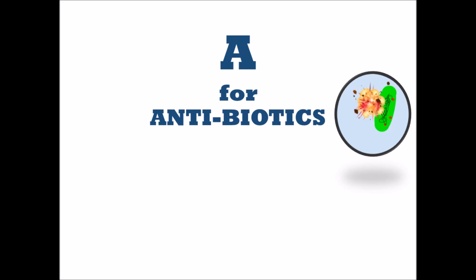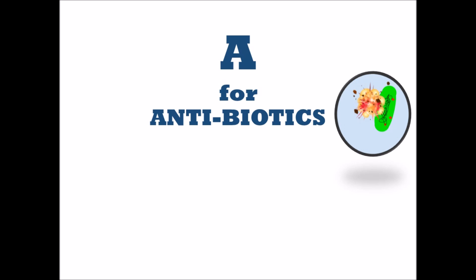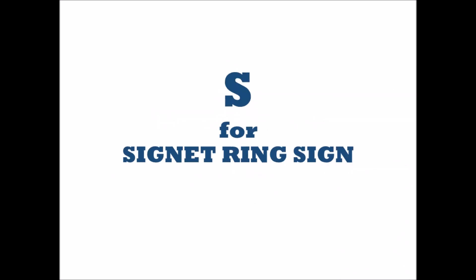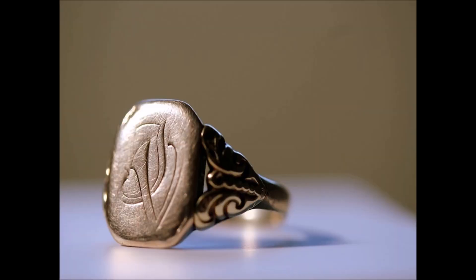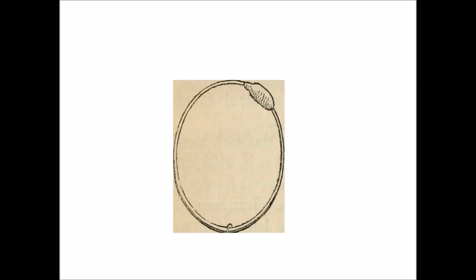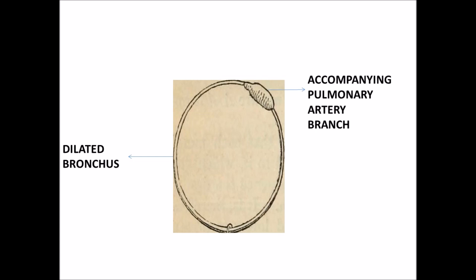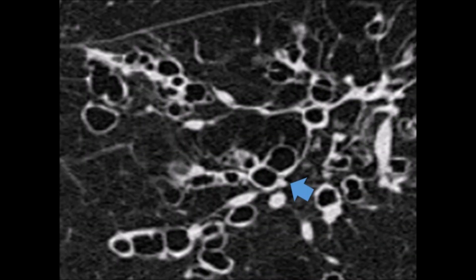A is for antibiotics — agents which kill bacteria — and anti-inflammatory agents that inhibit cells which mediate inflammation. These are chosen depending on the condition. S is for signet ring sign. Signet rings were used in the past as a sign of family heritage. In bronchiectasis, the ring represents a dilated bronchus and the signet indicates the accompanying non-dilated pulmonary artery branch. In this image, you can see a signet ring.